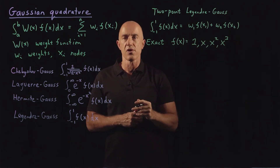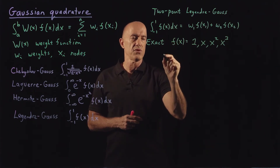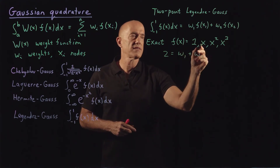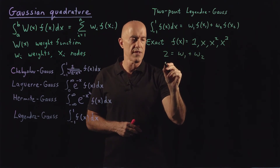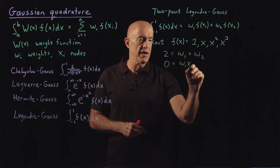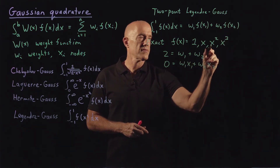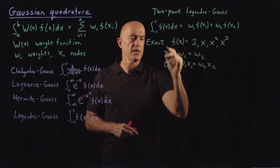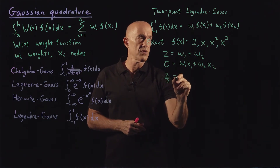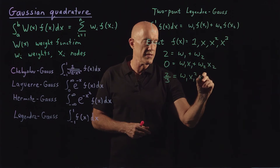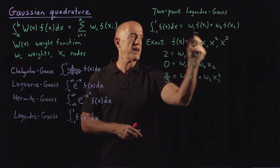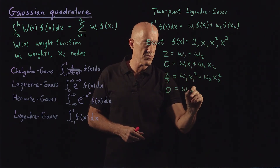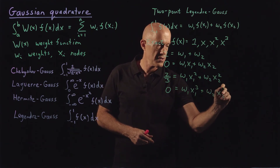Let's go through all of them. When f(x) equals 1, the left-hand side is 2, so we get 2 equals w_1 plus w_2. When f(x) equals x, we're integrating an odd function, so that gives 0 equals w_1 x_1 plus w_2 x_2. When f(x) equals x squared, integrating gives x cubed over 3, so 2/3 equals w_1 x_1 squared plus w_2 x_2 squared. And finally, when f(x) equals x cubed, that's again an odd function, so 0 equals w_1 x_1 cubed plus w_2 x_2 cubed.